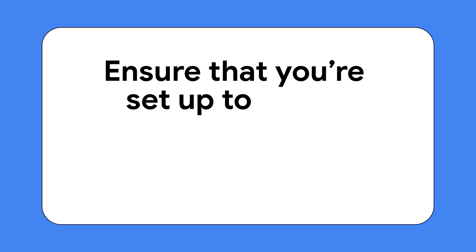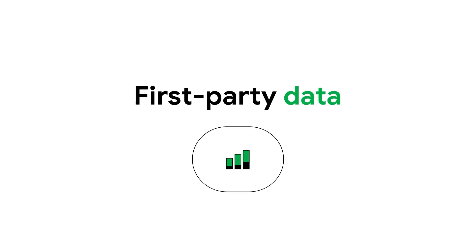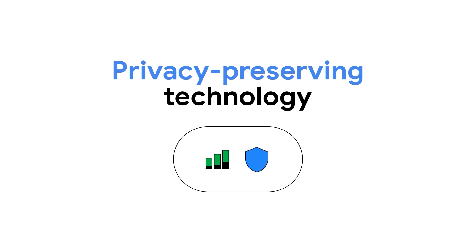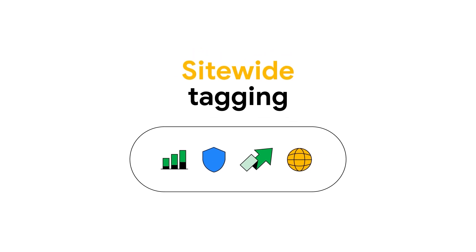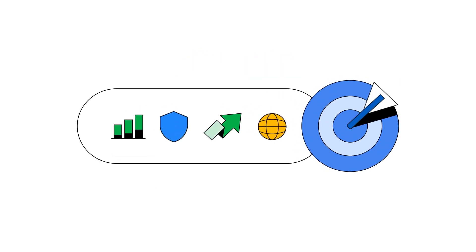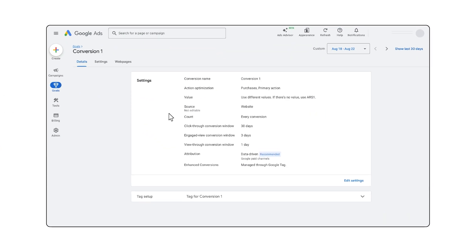Tip number one: bid to what matters. When opting into value-based bidding, the first step is to ensure that you're set up to bid on what matters most for your business. To do this, build a strong conversion measurement foundation that combines consented first-party data with privacy-preserving technology such as enhanced conversions and site-wide tagging. Ensure the conversions you report are aligned with your business goals, then assign values to your conversions in Google Ads.